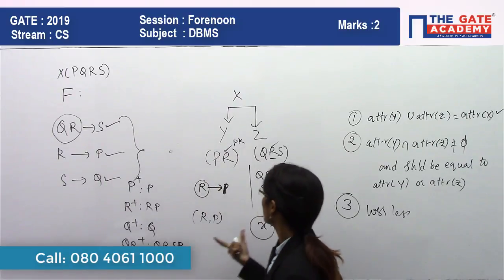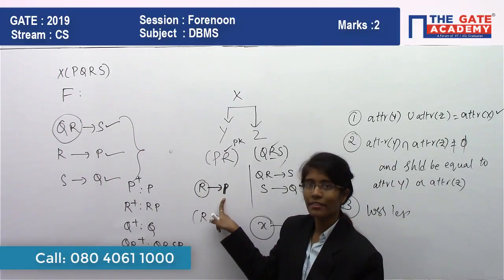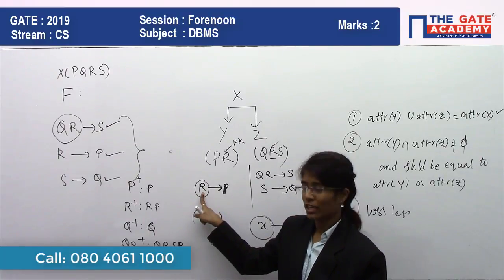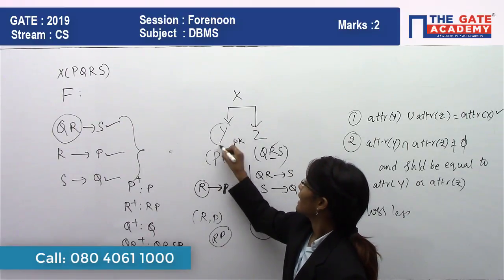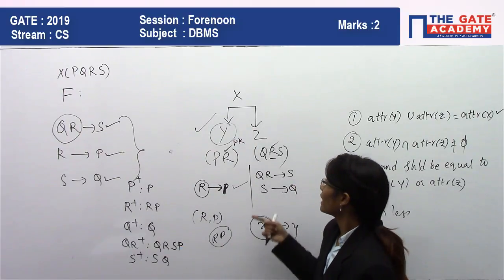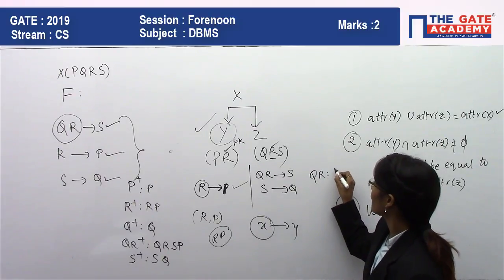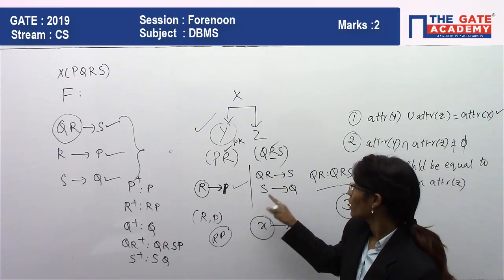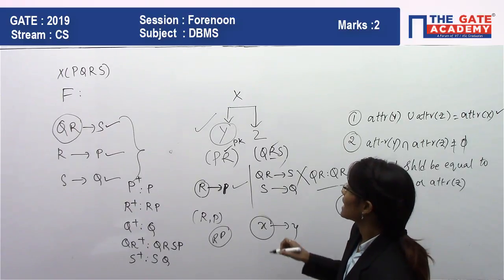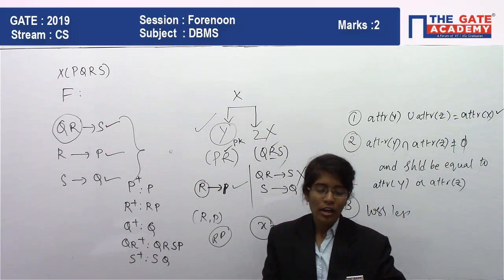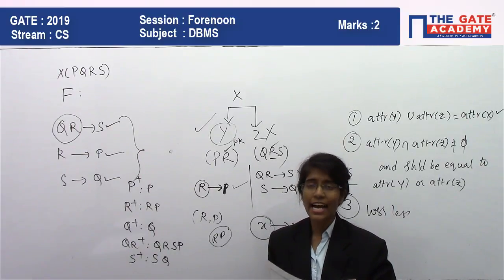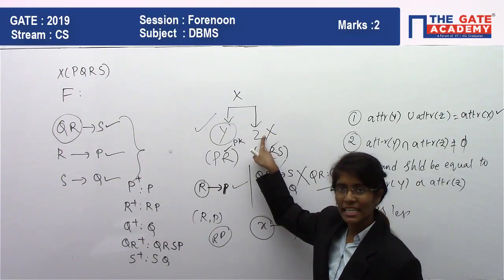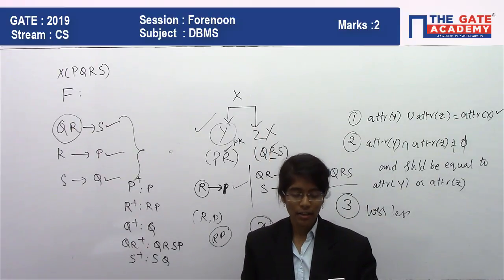Checking Y (PR): the only functional dependency is R → P, and R is a key/super key of Y, so Y is in BCNF. Checking Z (QRS): the key is QR since QR → QRS. But S → Q also holds in Z, and S is not a super key of Z since S⁺ = {S, Q} ≠ {Q, R, S}. Therefore Z is not in BCNF. Since Z is not in BCNF, Statement 1 — that both Y and Z are in BCNF — is false.